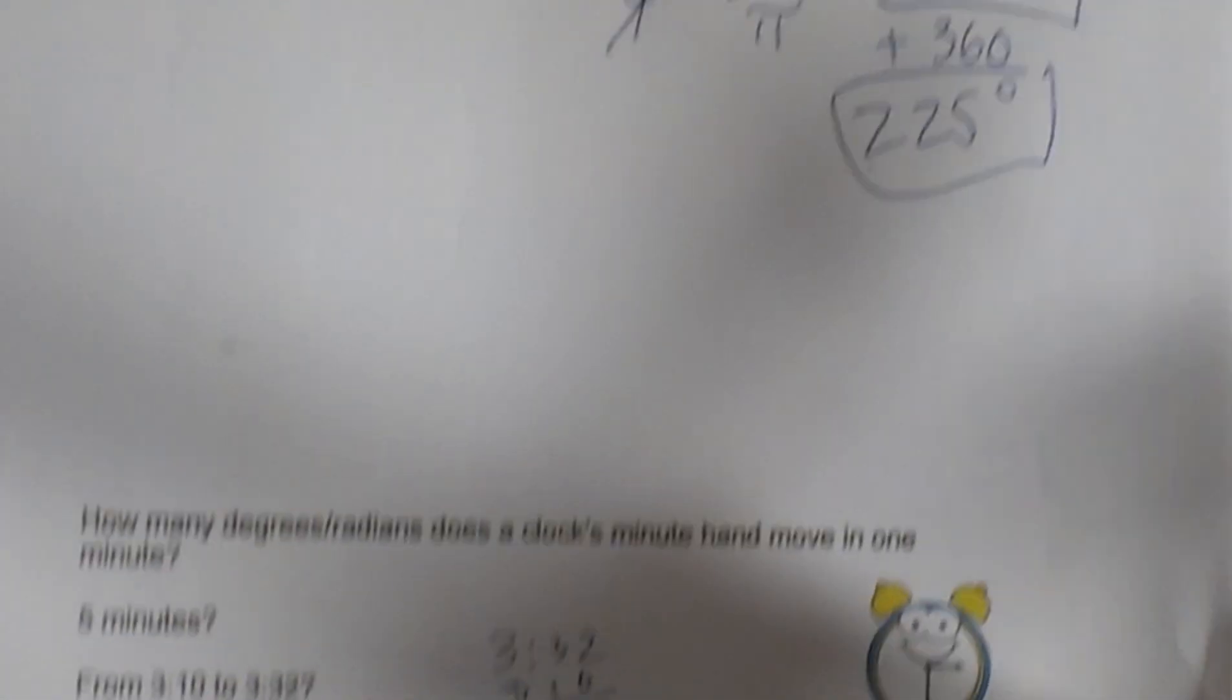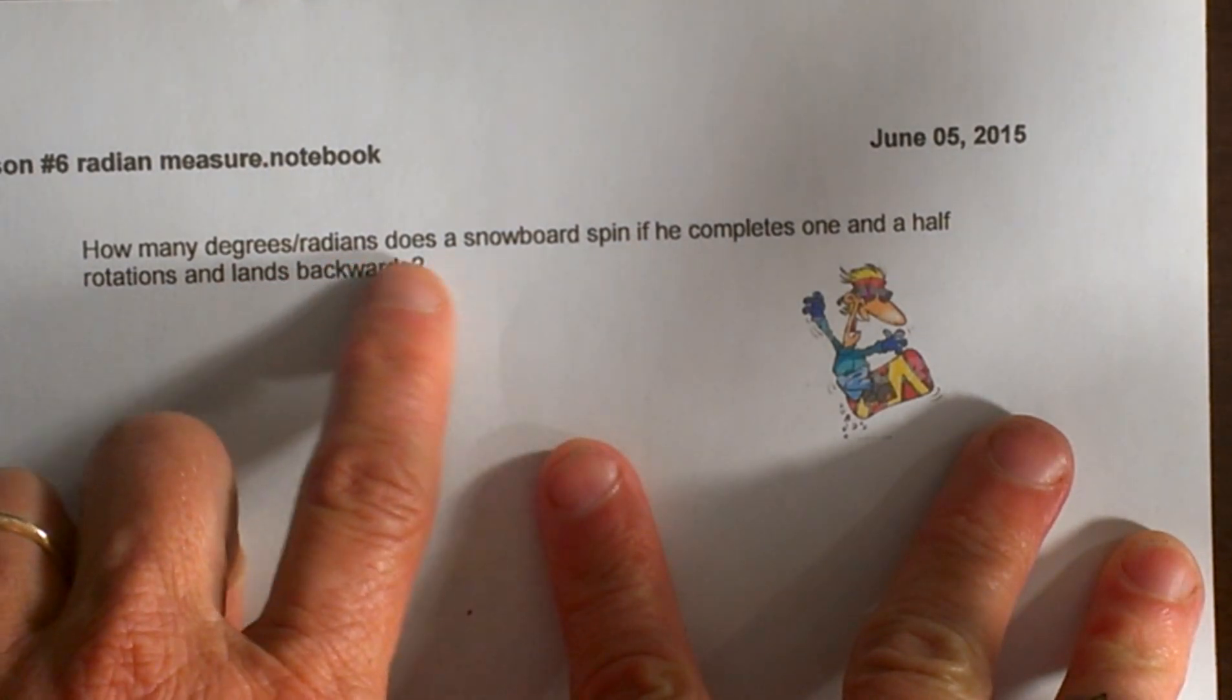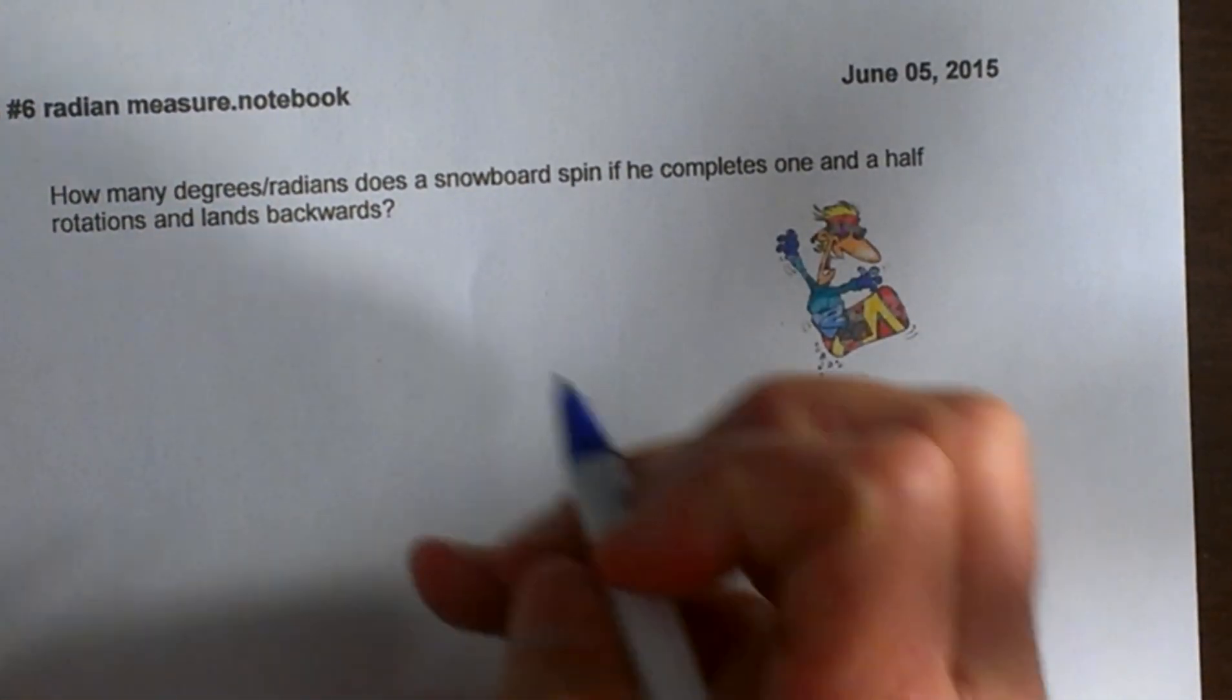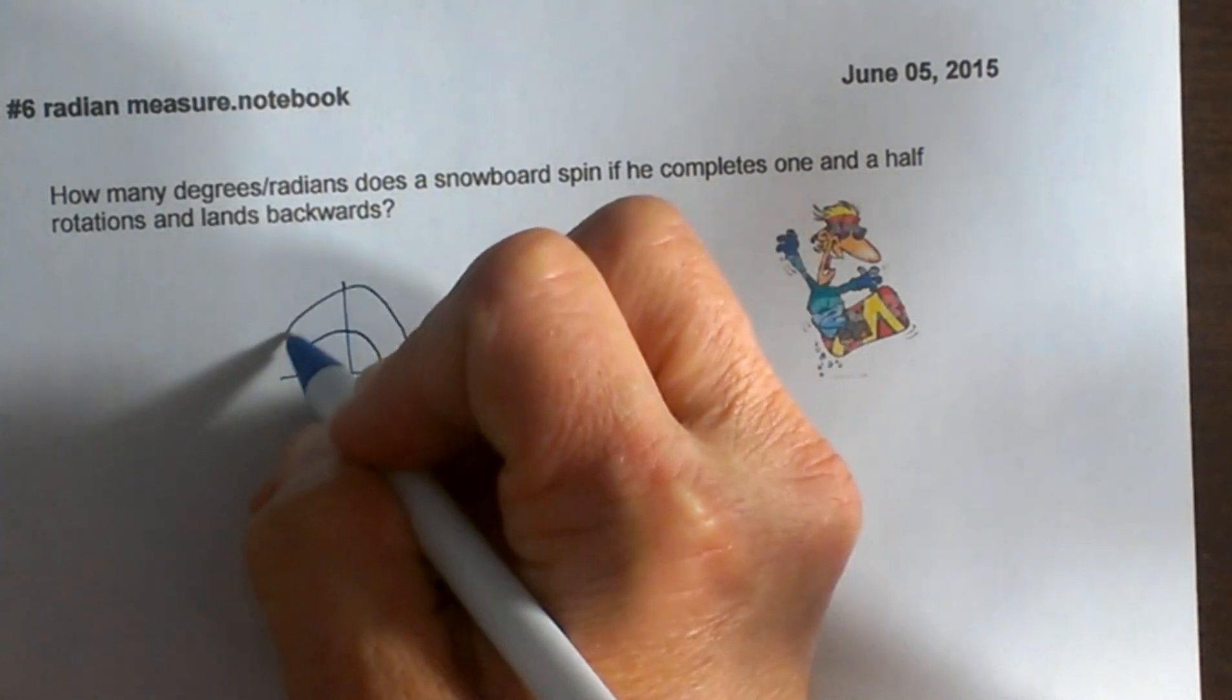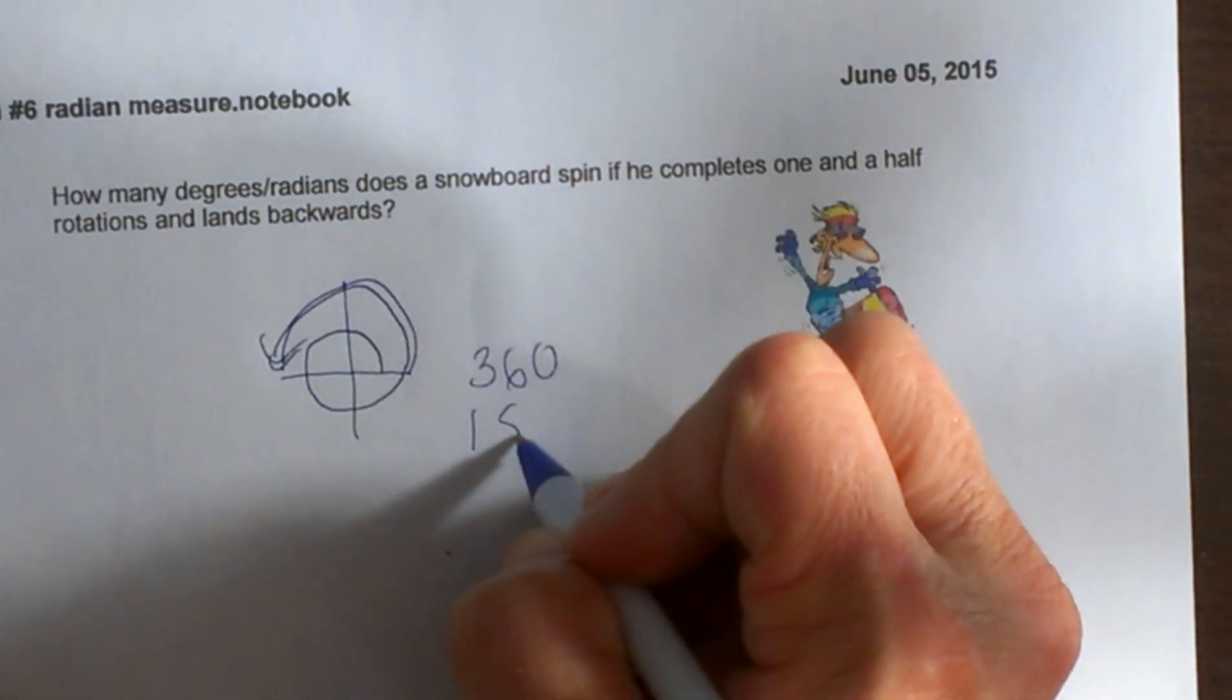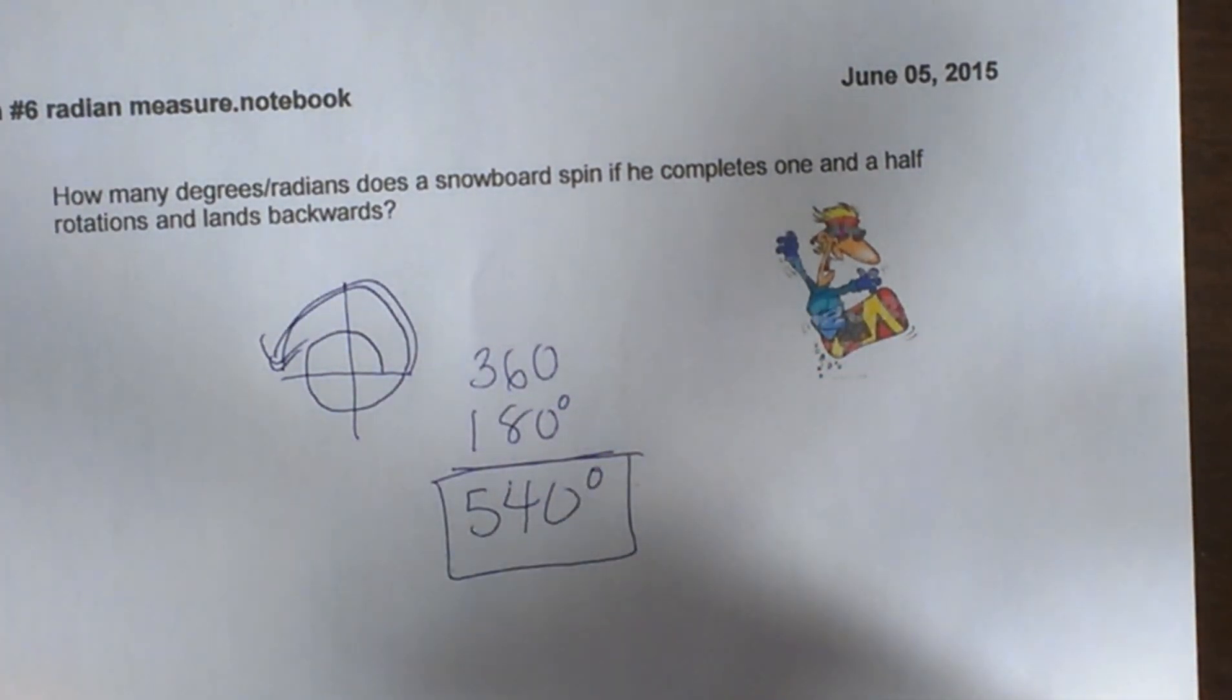How many degrees and radians does a snowboarder spin if he completes one and a half rotations and lands backwards? If he goes around a circle one full time and then another half, that's pretty easy in degrees. One full circle is 360 and then another half is 180. So that's 540 degrees.